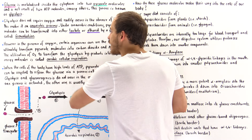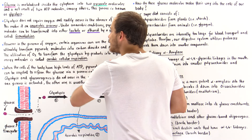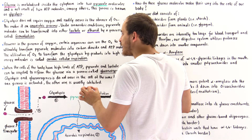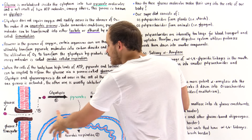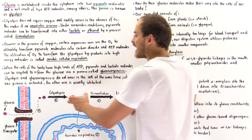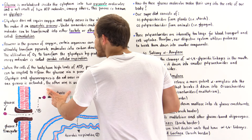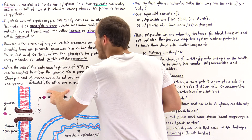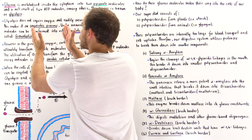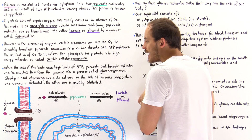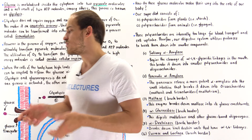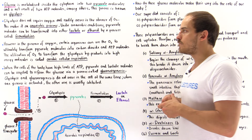This is known as aerobic cellular respiration. Aerobic cellular respiration includes not only the processes that take place in the mitochondria, but also includes glycolysis itself. However, glycolysis is itself an anaerobic process — it takes place regardless of whether or not we have O₂ molecules present in the cell.